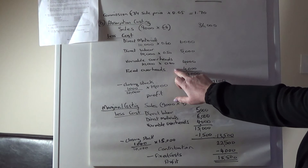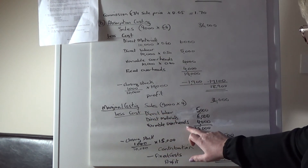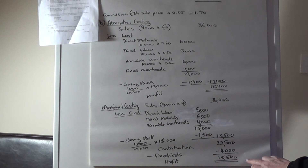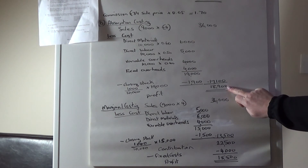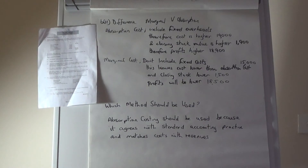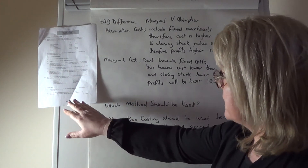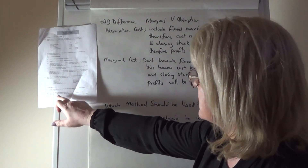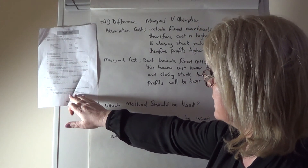The slight difference in profit figures — 18,900 under absorption versus 18,500 under marginal — arises because absorption costing includes fixed overheads in the product cost, whereas marginal costing does not. In marginal costing you arrive at contribution first, then subtract fixed costs to get profit.